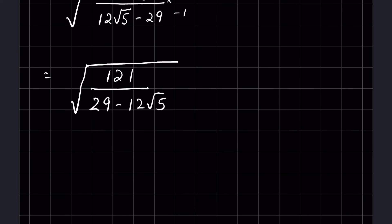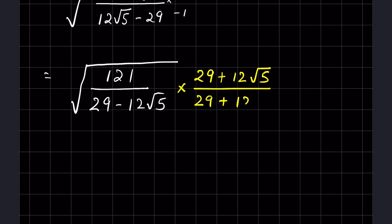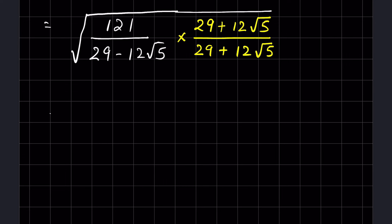Now we rationalize the denominator. To rationalize, we multiply and divide by the conjugate of the denominator, which is (29 + 12√5). So we have 121 × (29 + 12√5) divided by (29 - 12√5)(29 + 12√5), all under a square root.